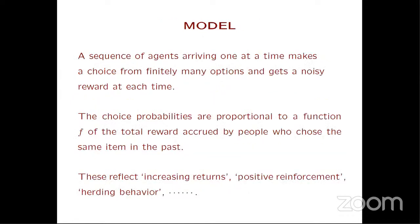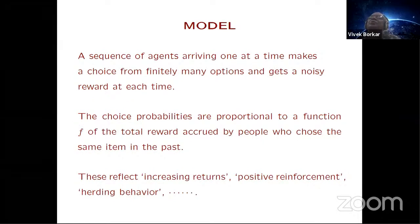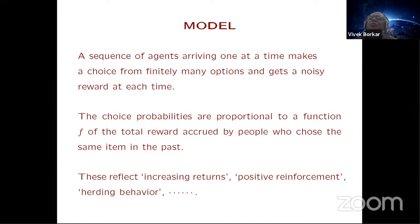Let me start with the model. The model is quite simple: you have a sequence of agents arriving one at a time, and they can choose from finitely many options. Each time an agent picks one of them, they get a noisy reward. The identity of the agents is irrelevant — you might as well assume it's a new agent arriving each time. The choice probabilities are proportional to a function of the total reward accrued by people who chose the same item in the past. The function F is designed to reflect known phenomena such as increasing returns from economics, positive reinforcement, and herding behavior in social sciences.